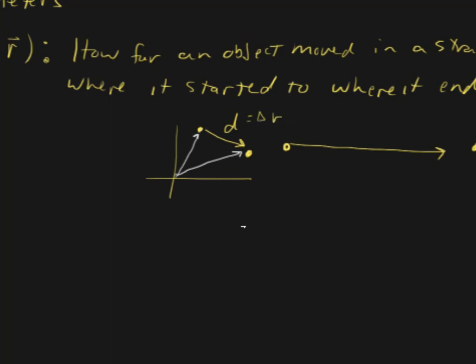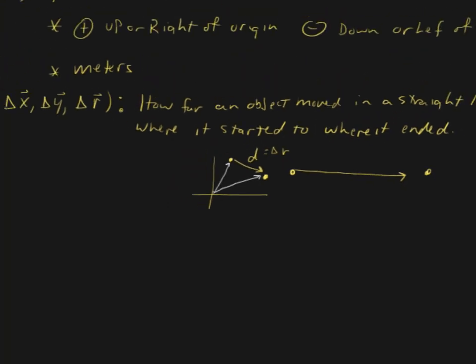Another case is if we have an object moving two-dimensionally from point A to point B, and maybe the object follows a winding path. If that were the case, the path length is going to be greater—that is the distance. But the displacement is only that straight line distance from point A to point B.